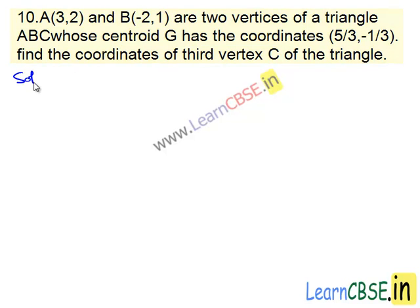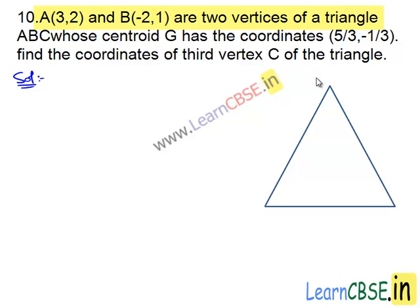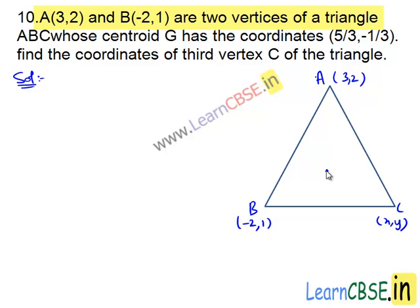Moving on to the solution. In this problem, two vertices of the triangle are given, that is A and B, which are minus 2 and 1. Let's say X, Y is the third vertex, and the centroid of the triangle G is given as 5 divided by 3, minus 1 divided by 3.